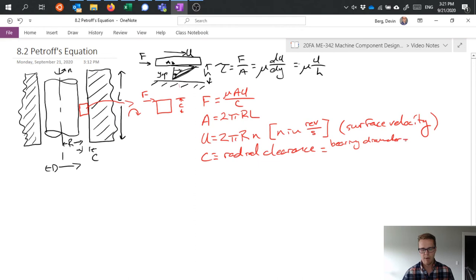So it's the gap that I have between my shaft and the hole and in reality it's bearing diameter minus shaft diameter divided by 2. So I can figure out what that is right.